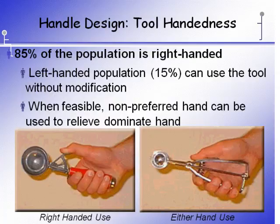80% of the population is right-handed, which means 15% are left-handed. It's helpful to provide tools that can be used with either hand, which allows someone to use their non-dominant hand if the dominant hand gets tired, or to provide special tools for right- and left-handed users.